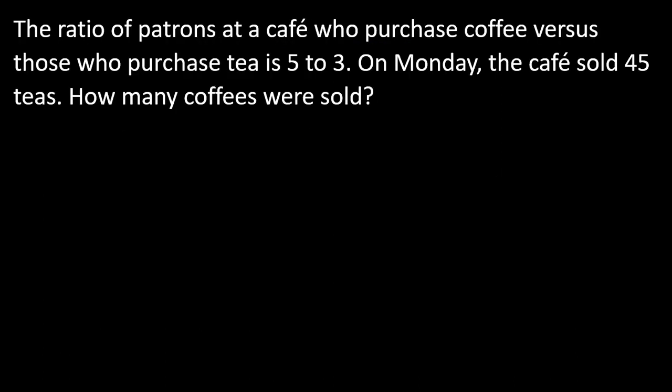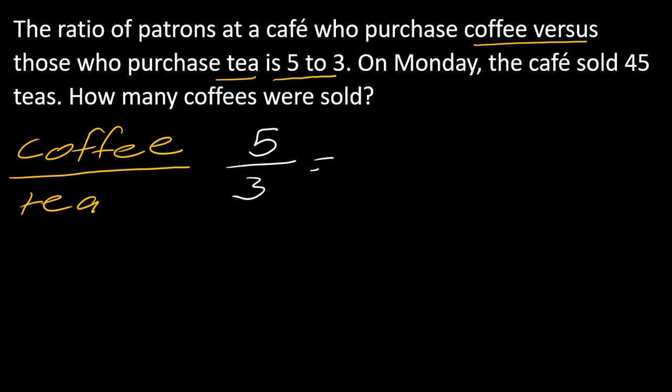This next one works very similarly. The ratio of patrons at a café who purchase coffee versus those who purchase tea is 5 to 3. On Monday, the café sold 45 teas. How many coffees were sold? Set this up with coffee versus tea. This is 5 to 3 on one side. On Monday, the café sold 45 teas, so be careful - this goes here. It's asking for how many coffees, so there's my setup.